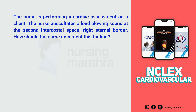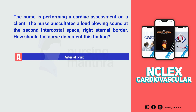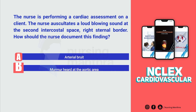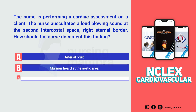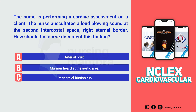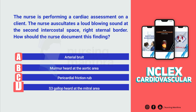There is a loud blowing sound at the second intercostal space at the right sternal border. Option A: arterial bruit. Option B: murmur heard at the aortic area. Option C: pericardial friction rub. Option D: S3 gallop heard at the mitral area.